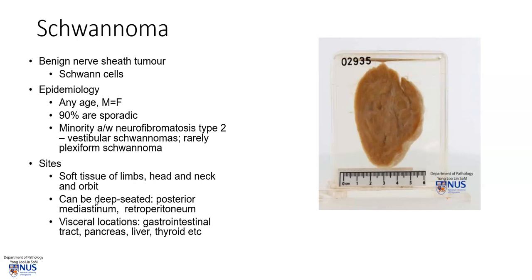Usually, these tumors occur in the soft tissue of limbs, in the head and neck region, and they can also occur in the orbit. In addition, they can arise in deep-seated locations, usually the posterior mediastinum and the retroperitoneum, and some of these tumors can be quite large. They can also arise in visceral locations such as the gastrointestinal tract, pancreas, etc.